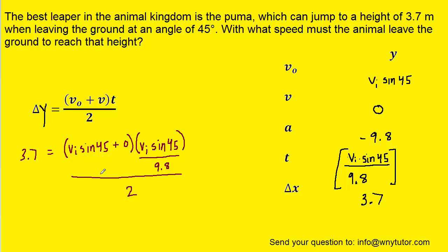Now this might look like an intimidating equation, but it's going to be possible to solve this for v initial, which is indeed what we're looking for. Notice that v initial sine 45 plus zero is still vi sine 45. In other words, we can get rid of that plus zero.